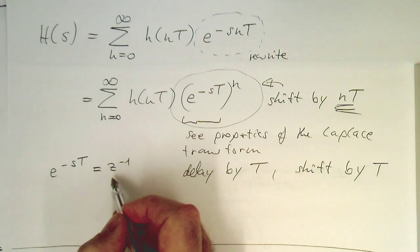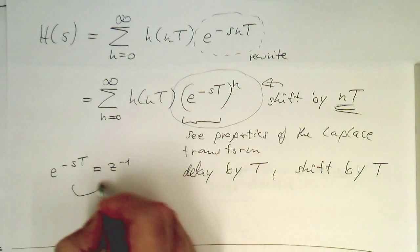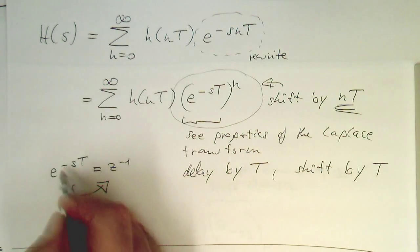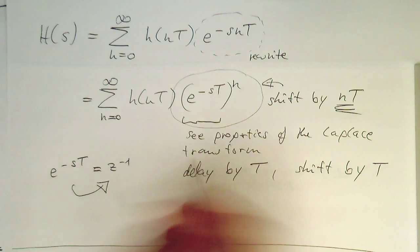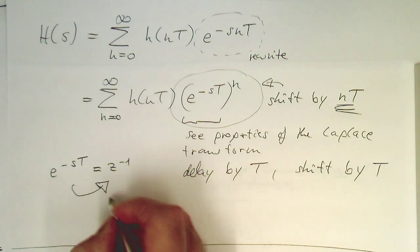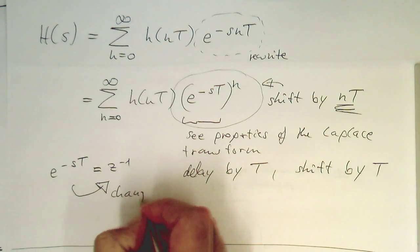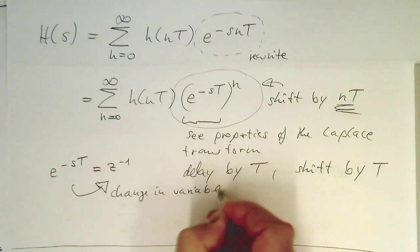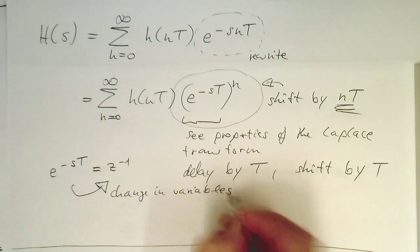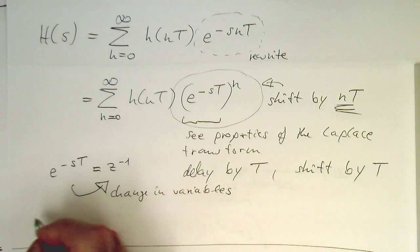We do a change in variable. We change this e^(-sT) and call this z^(-1). Change in variable.